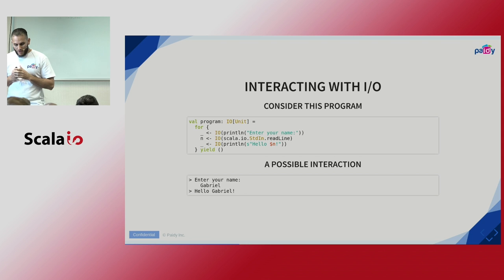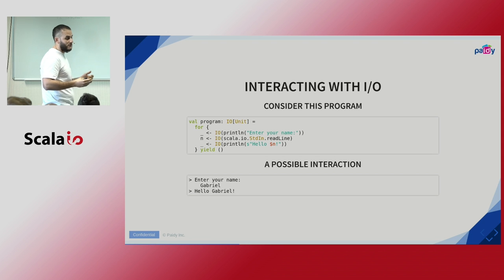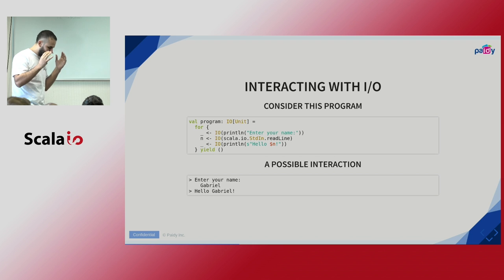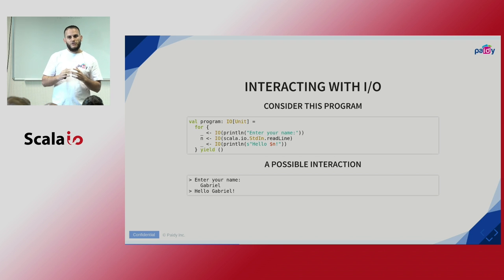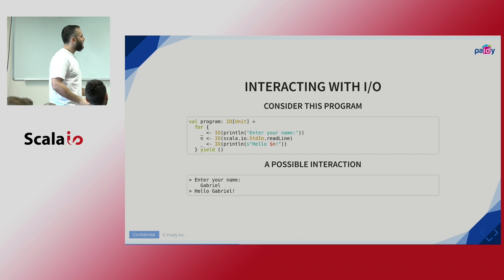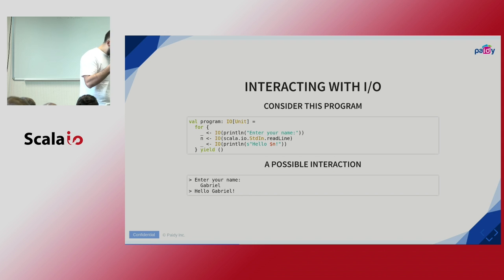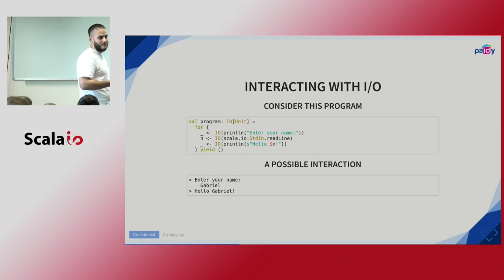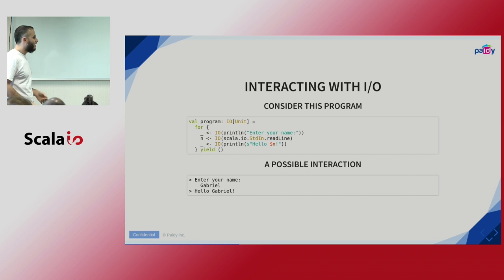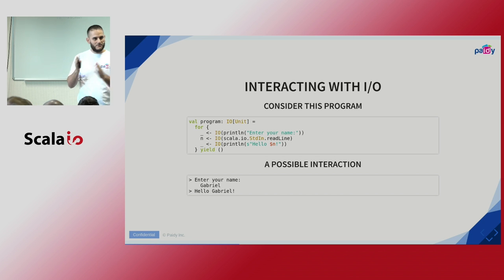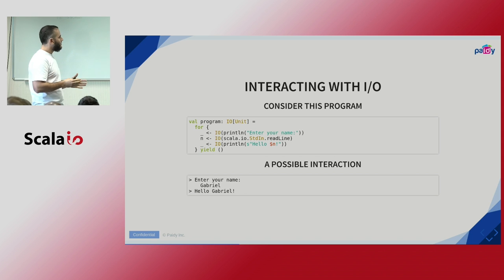One thing I've noticed is that many people without the complete picture of Cats Effect take imperative programming code, wrap everything in IO, and think they've been doing functional programming. But it doesn't end there — Cats Effect provides a hierarchy of type classes you can use to abstract over the effect type. You should ask yourself: how do you test this program? The only thing you get is IO of Unit, and the only thing you can do with that is run it by calling unsafeRunSync. We are mixing the logic of our program with the interpretation — we'd like to separate those.